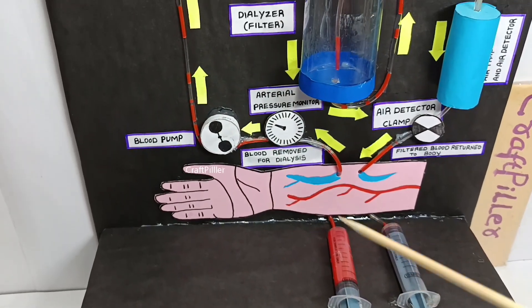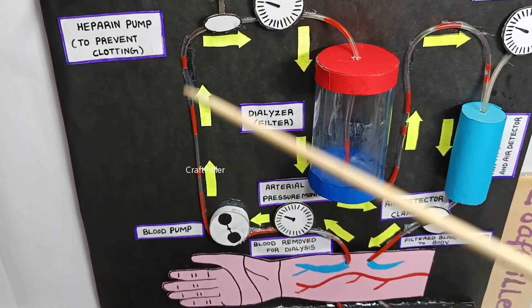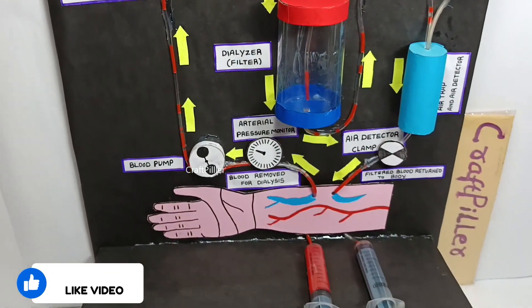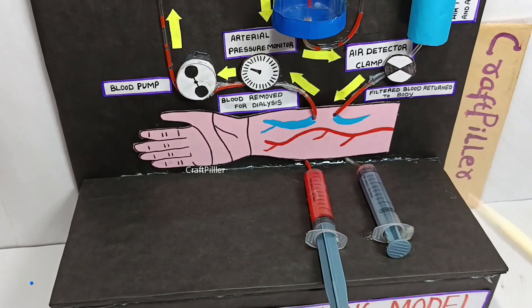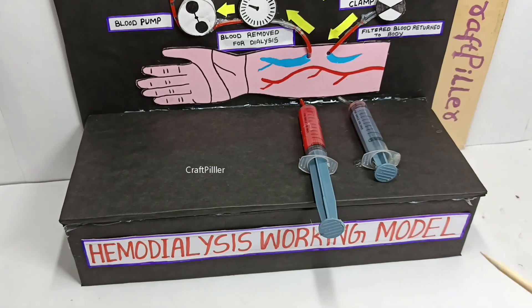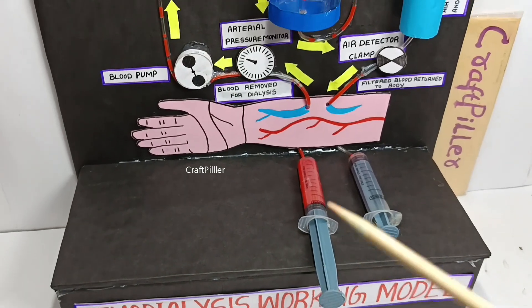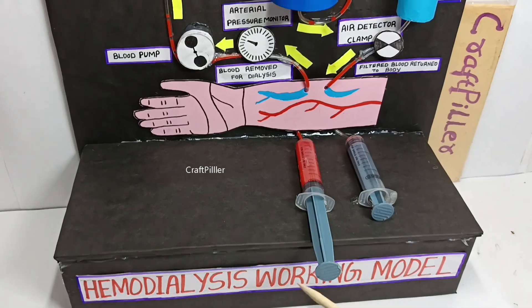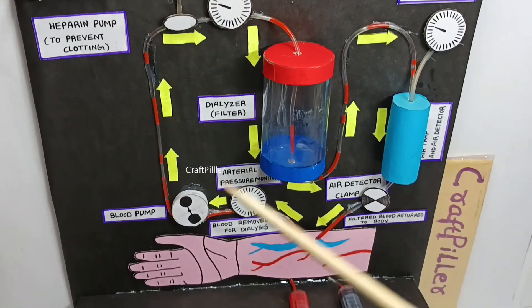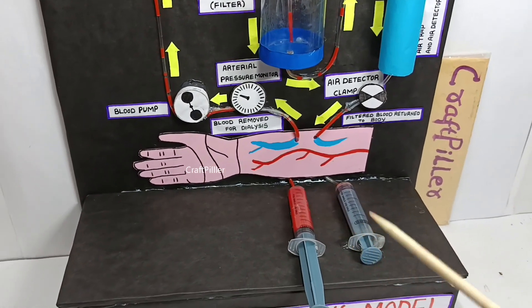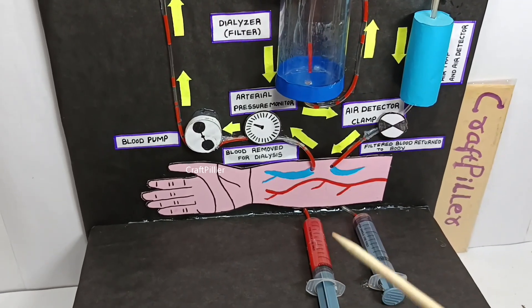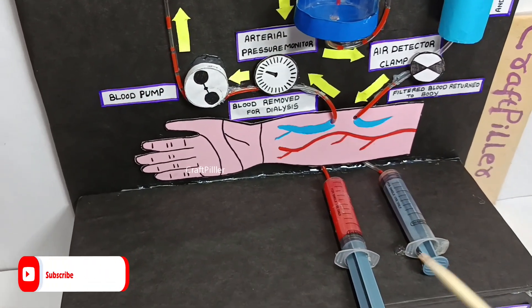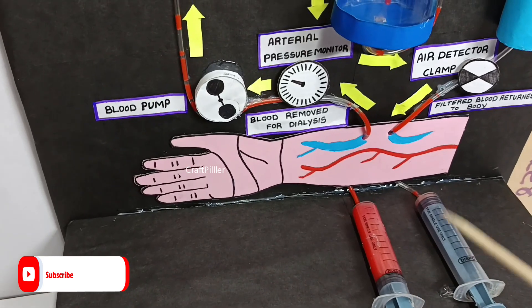I am going to explain in detail about how the hemodialysis working model really works. Especially, this hemodialysis is used when there is a problem with the kidney. This hemodialysis working model will act as an artificial kidney. The function of this hemodialysis working model is to purify the blood by removing all the unwanted waste which is available in the blood, as well as any excess liquid available in the blood. This will get removed by using this dialyzer.